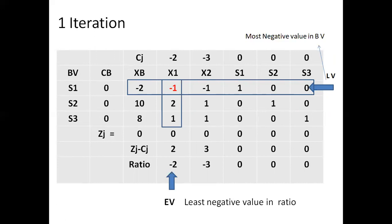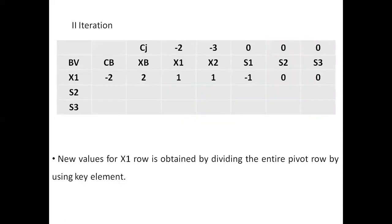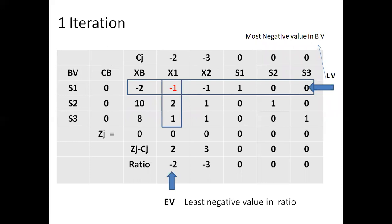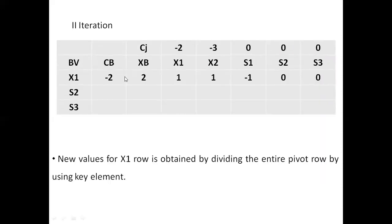After identifying the leaving variable S1 and entering variable x1, S1 is replaced by x1 in the second iteration. In the second iteration, the basic variables are x1, S2, and S3. The new x1 row is obtained by dividing the entire pivot row by the key element, which is minus 1. Similarly, new values for S2 and S3 rows are computed.